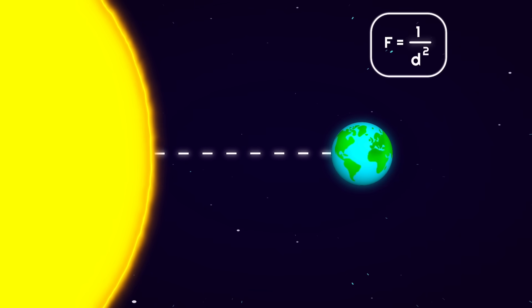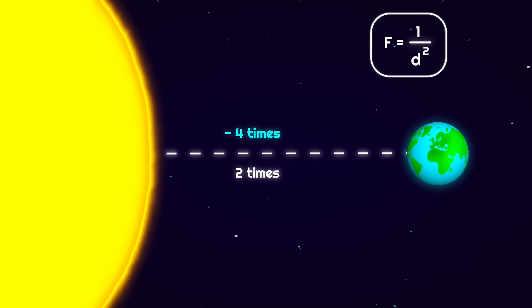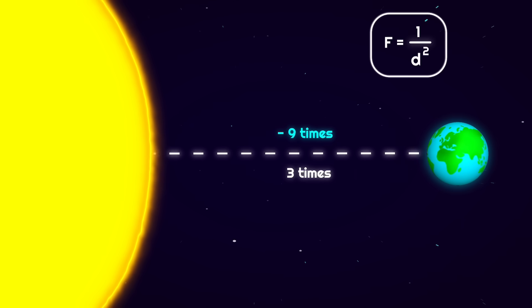This means that if the distance increases by two times, the force will decrease by four times. If the distance increases by three times, the force decreases by nine times. This is what Newton explained about gravity.